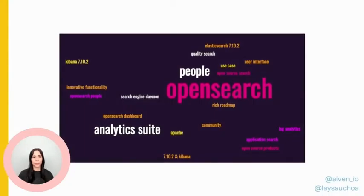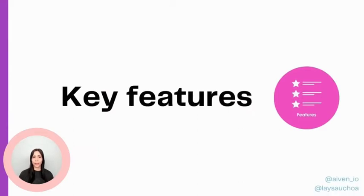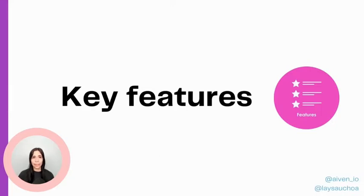So what is OpenSearch? OpenSearch is a distributed open source search and analytics suite suitable for real-time applications, monitoring, log analytics, and more. OpenSearch is an alternative to Elasticsearch and is often used to enable search functionalities for your application. Some key features include scoring of entries, scalability, high performance with large amounts of data, and the ability to perform aggregations.